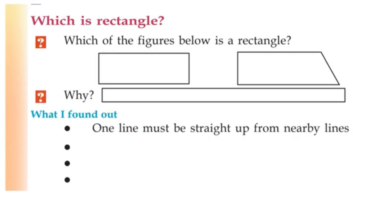Every rectangle has four sides. One line must be straight up from nearby lines. Opposite sides are equal — it has four corners. Two pictures have four corners. Opposite sides equal — four sides. This picture has opposite sides equal. This is a straight line. This is a rectangle.